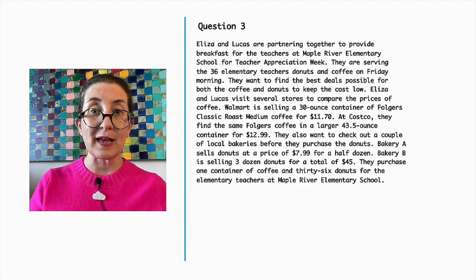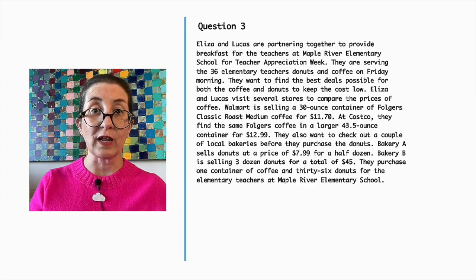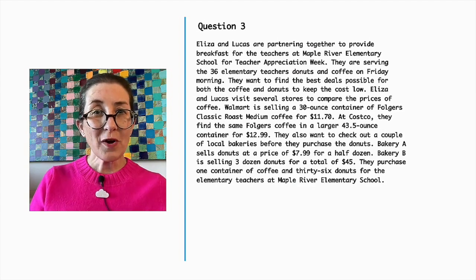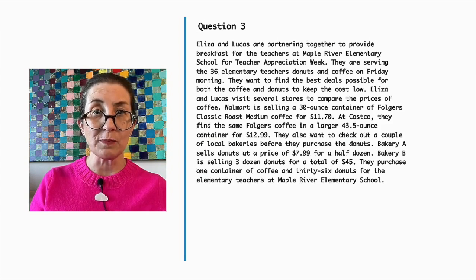They want to find the best deals possible for both the coffee and donuts to keep the cost low. Eliza and Lucas visit several stores to compare the prices of coffee. Walmart is selling a 30-ounce container of Folgers Classic Roast Medium Coffee for $11.70.